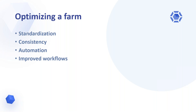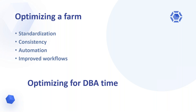You also need automation where all maintenance routines are deployed and working identically on all database instances, and adjustments to tuning are deployed across the farm. Fixes that are possible to predict can be implemented automatically. You need improved workflows that help the DBA prioritize the most important tasks, alert the right part of the organization about problems, and improve the time used to correct issues. Optimizing a farm is optimizing for DBA time.